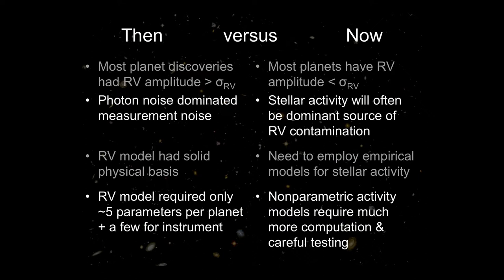In the past, we had a relatively simple model — each planet described by a Keplerian orbit, maybe seven parameters or down to five due to projection effects, plus a few to model the instrument. A small enough number of parameters that you could use traditional methods like MCMC or importance sampling for a nice statistical characterization. But now we're having to shift to modeling stellar activity with non-parametric models that are both more challenging and more challenging to interpret. We have to be more careful — not just doing the first thing that comes to mind, but validating and verifying that models are applicable and do what we want.